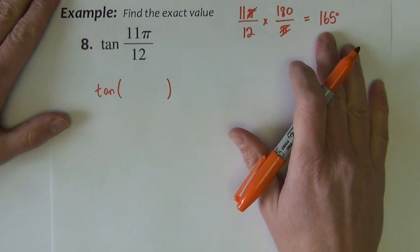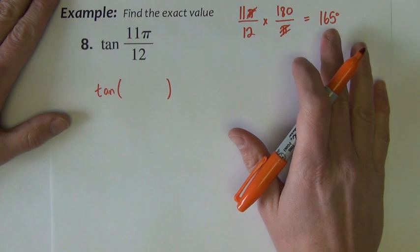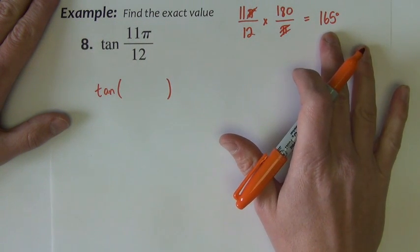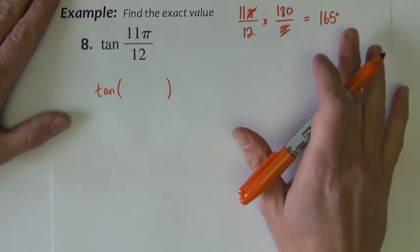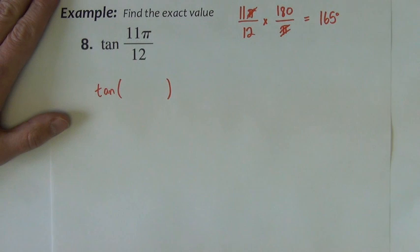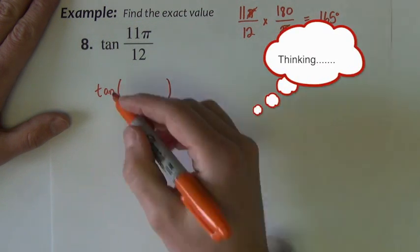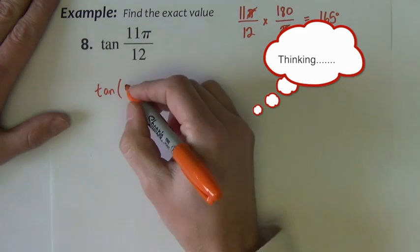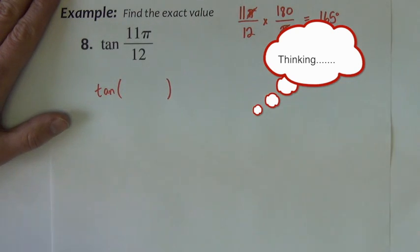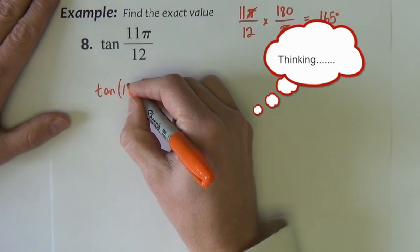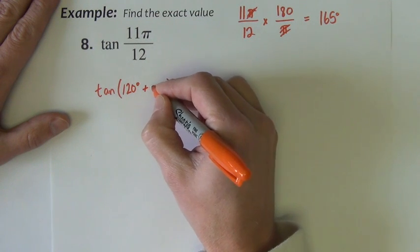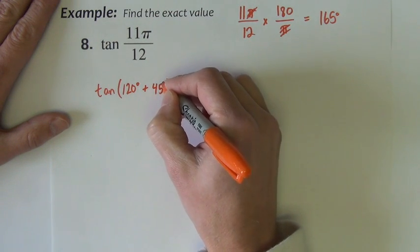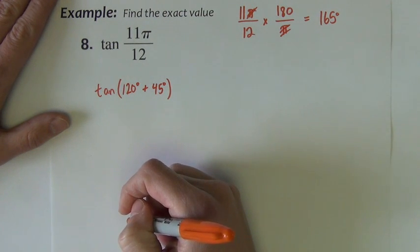So I need to come up with two values that either add or subtract to that one that are on my unit circle. And that's the important thing, they have to be on the circle. So let's see, could we use 30? No, that wouldn't work. Could use 120 degrees plus 45 degrees. That will work.